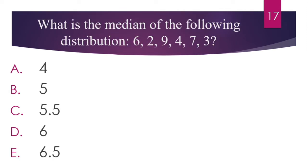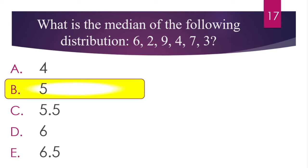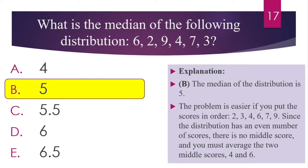Question number 17. What is the median of the following distribution? The answer is B — 5. First, arrange the numbers in ascending order: 2, 3, 4, 6, 7, 9. We have 6 numbers total — an even count. To find the median, we take the two middle numbers (4 and 6) and find their average: (4 + 6) / 2 = 5. The median is 5.